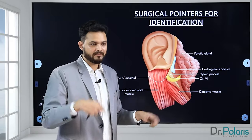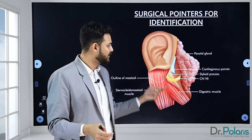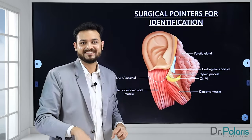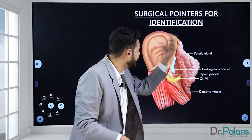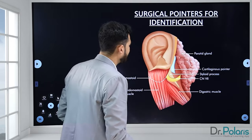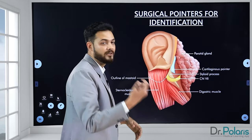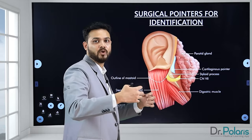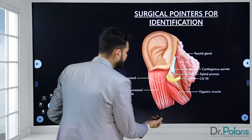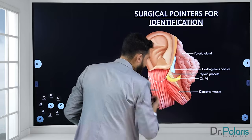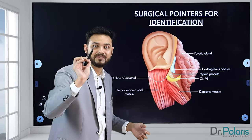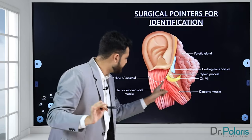One final important topic: surgical pointers for the facial nerve. These are identification landmarks used during parotidectomy when we need to locate the facial nerve. The first and most important landmark is the posterior belly of the digastric muscle — the facial nerve runs superior and parallel to this belly.